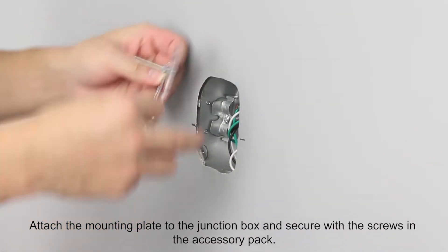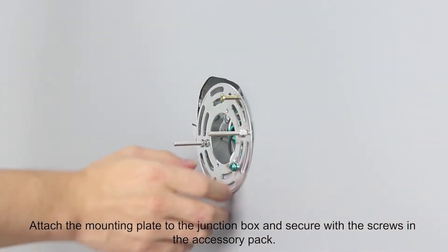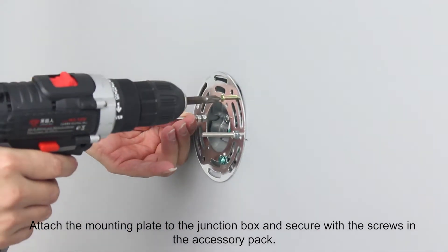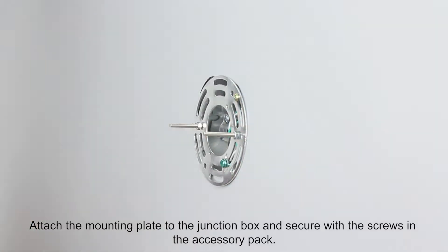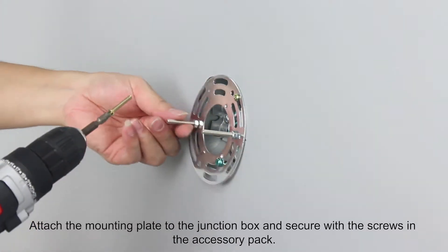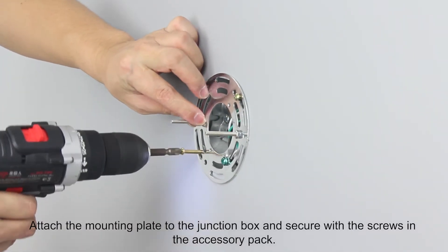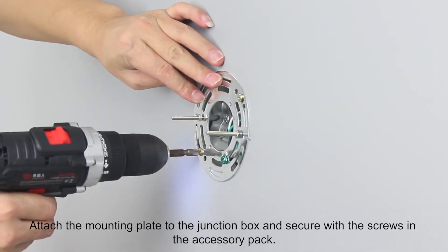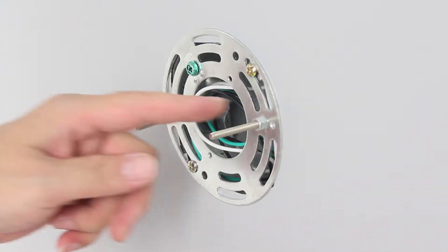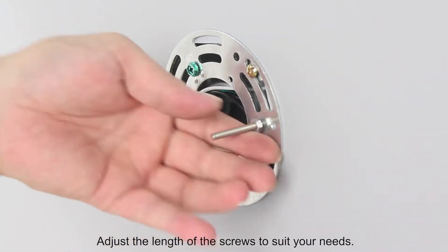Attach the mounting plate to the junction box and secure with the screws in the accessory pack. Adjust the length of the screws to suit your needs.